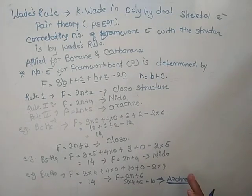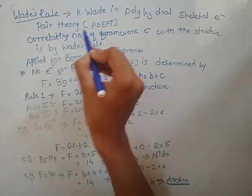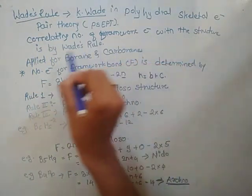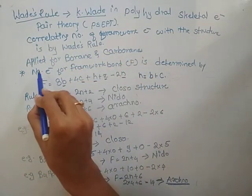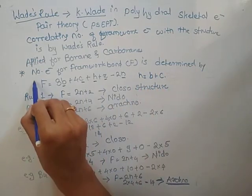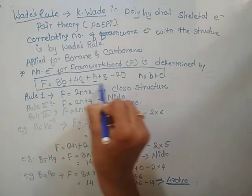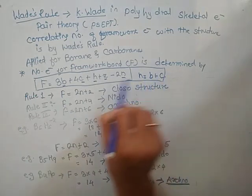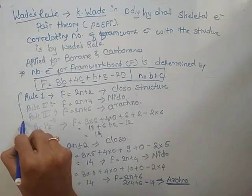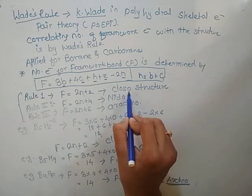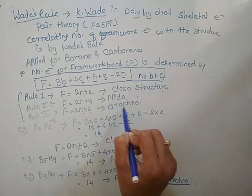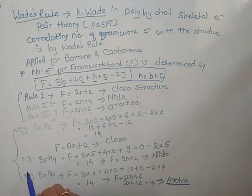So that's about this video. We have discussed what is Wade's rule. This rule is proposed by K. Wade. It correlates the number of framework electrons with the structure. F is determined by the equation F equals 3B plus 4C plus H plus X minus 2N, and N equals B plus C. If F equals 2N plus 2, closo; if F equals 2N plus 4, nido; and if F equals 2N plus 6, arachno. These are the examples of closo, nido, and arachno.